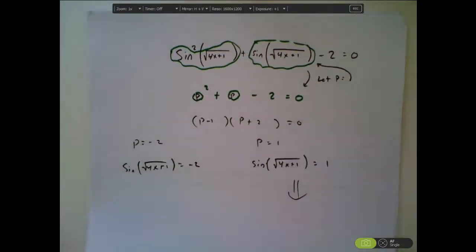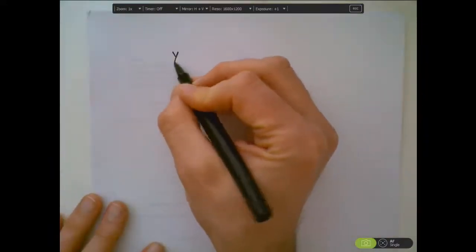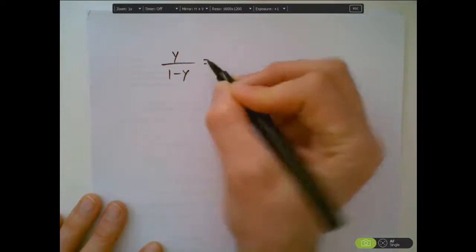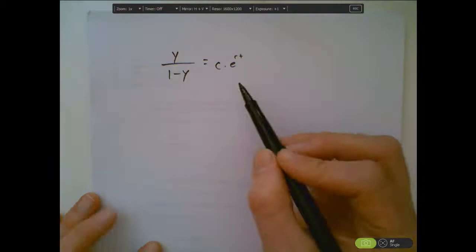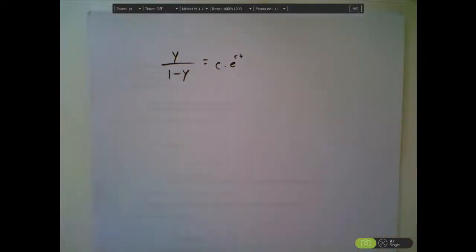Here's how we used blob in my calculus class the other day. The students had this problem: y over one minus y equals c times e to the rt. Alright, so they were supposed to solve for y.